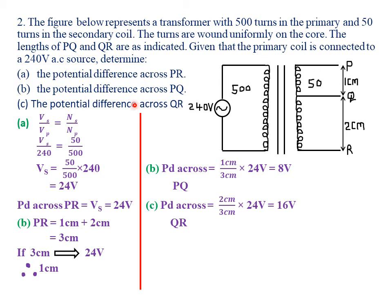For part C, the potential difference across QR: QR has a length of 2 centimeters. If 3 centimeters is equivalent to 24 volts, then the potential difference across QR equals 2 centimeters over 3 centimeters times 24 volts, which gives 16 volts.